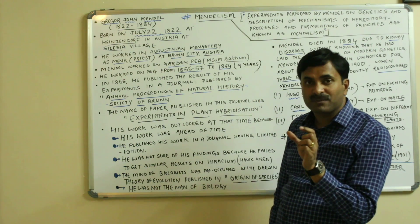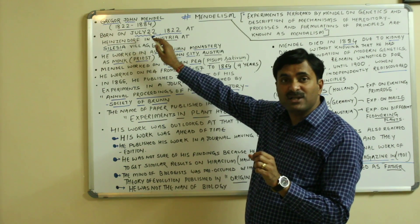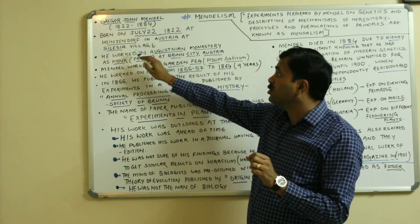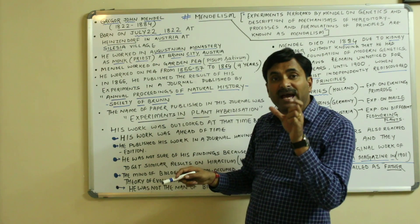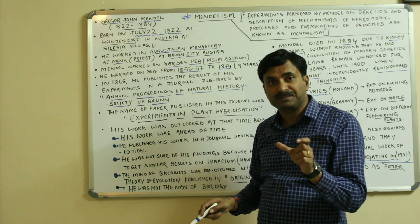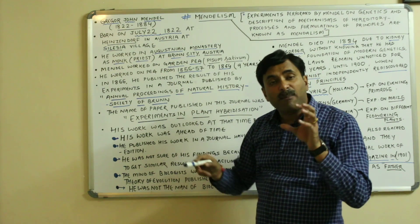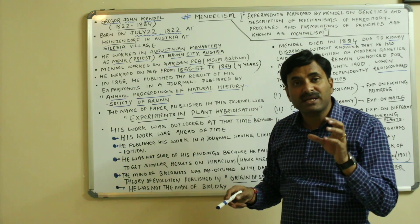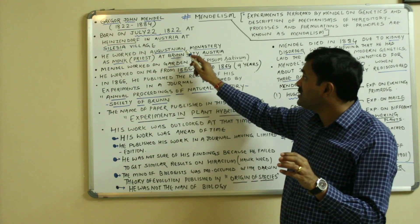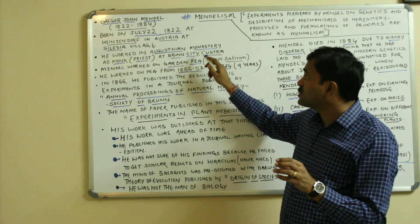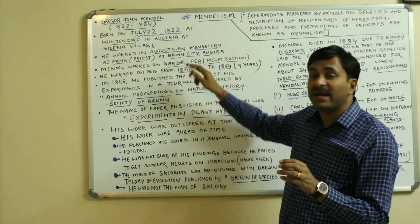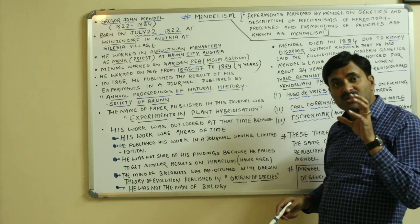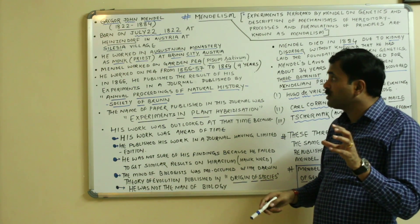He was born on 22nd July 1822 in a small village known as Silesia village, which is in Hezendorf in Austria. He was actually appointed as a priest or monk in the year 1847 in an Augustinian monastery located in Austria at the Brno city. While working in the Augustinian monastery, Mendel worked on garden pea, which is also called Pisum sativum, in his church garden.